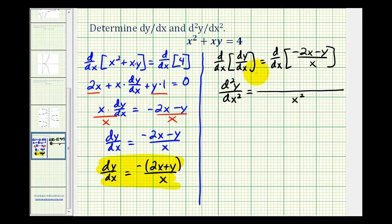And then the numerator, we'll have the denominator times the derivative of the numerator, which will be negative 2 minus 1 times dy/dx, or just dy/dx. Remember, because we're taking the derivative with respect to x, and this term has a y. Minus the numerator times the derivative of the denominator, which would just be 1.